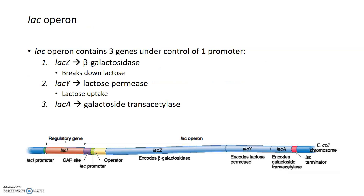Operons are basically sections of DNA in bacteria — multiple genes that are controlled by the same promoter. An operon generates a polycistronic mRNA, or mRNA that contains multiple genes in it. Operons are specific to bacteria and archaea; eukaryotes don't have operons. Operons are one of the things that makes gene expression more efficient in bacteria and prokaryotes, because you can express all these genes at the same time under the control of one promoter, which means one polymerase binding to one site and making multiple genes.